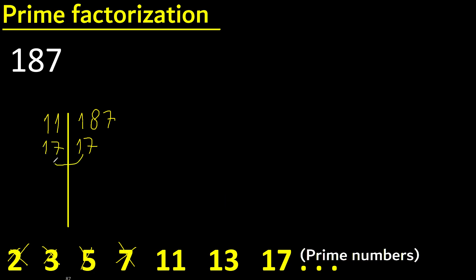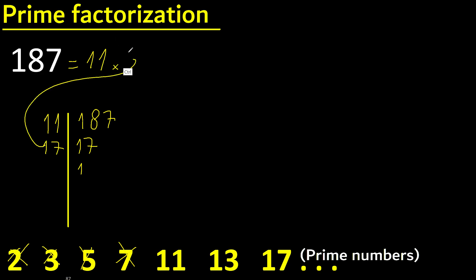So we have 11 times 17 equals 187. 11 appears 1 time, so its exponent is 1. 17 appears 1 time, so its exponent is 1. Therefore the prime factorization is 11¹ × 17¹. Finish — prime factorization complete.